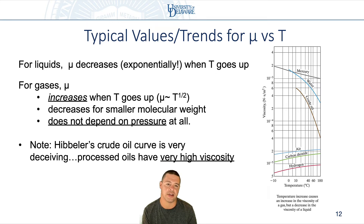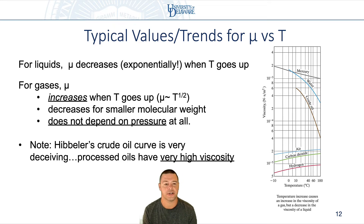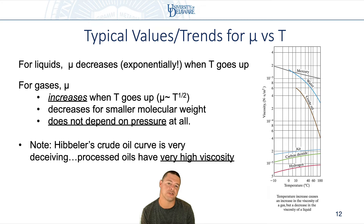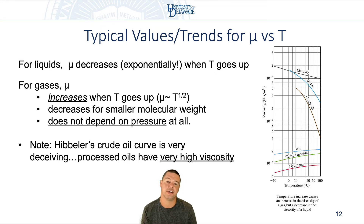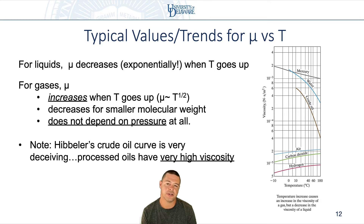Gases, on the other hand, are a little bit non-intuitive. The viscosity of gases actually goes up as the square root of temperature, and you can show that exactly using the so-called kinetic theory of gases — I'll explain why in the next slide. It also turns out that viscosity decreases for smaller molecular weight, so hydrogen and helium, which have pretty comparable molecular weights, also have pretty comparable viscosities.